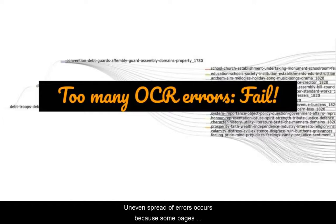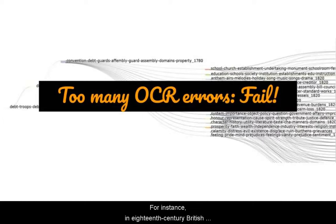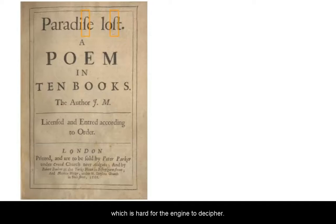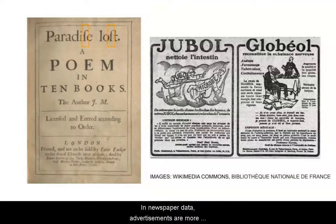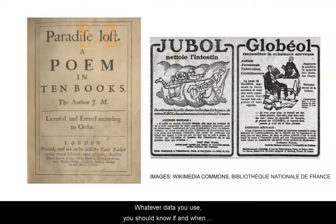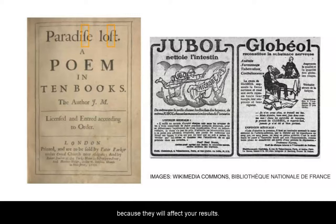Uneven spread of errors occurs because some pages or letters are more difficult for the OCR engine to read. For instance, in 18th century British texts you'll often see the long S, which is very hard for the engine to decipher. In newspaper data, advertisements are more likely to contain errors than regular articles. So whatever data you use, you should know if and when there are such typical OCR errors in it, because they will affect your results.